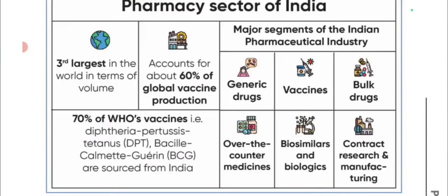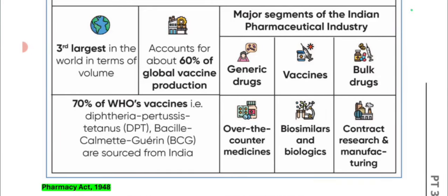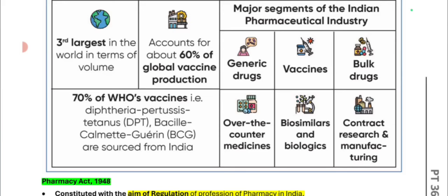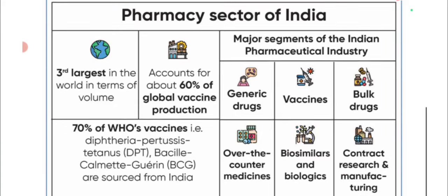Regarding the pharmacy sector in India: India is the third largest in the world by volume, producing 60% of global vaccines. Major segments include generic drugs, vaccines, bulk drugs, over-the-counter medicines, biosimilars, biologics, and contract research and manufacturing. India supplies 70% of WHO vaccines, including DPT and BCG vaccines, to other countries. The Pharmacy Act 1948 was made to regulate pharmacy in India with uniform training, education, and standardization. The Central Council — the Pharmacy Council of India — along with State Pharmacy Councils handles registration of pharmacists.